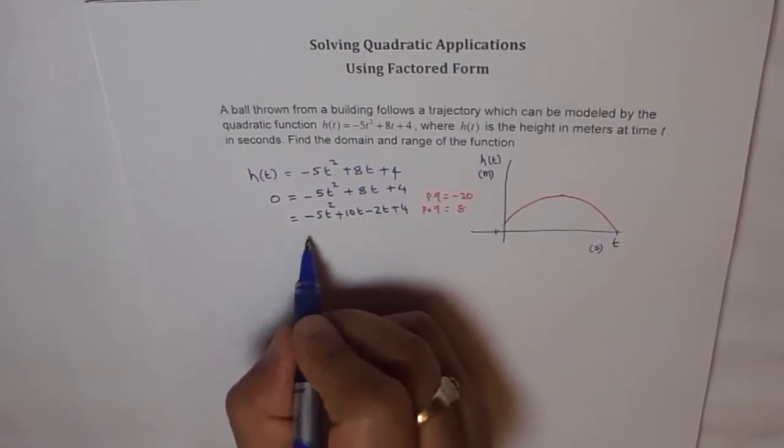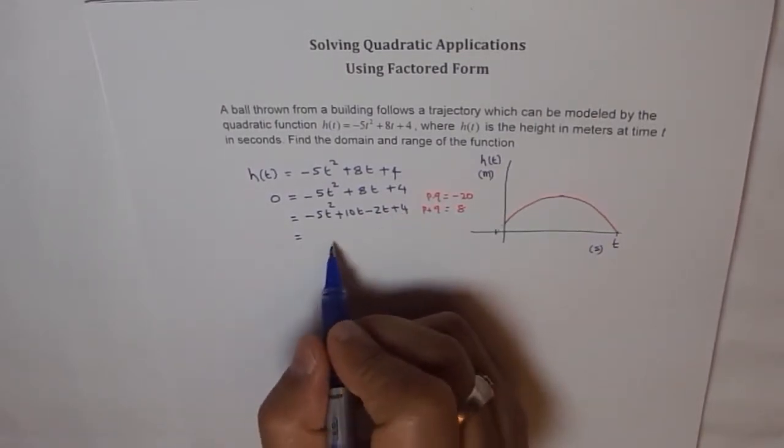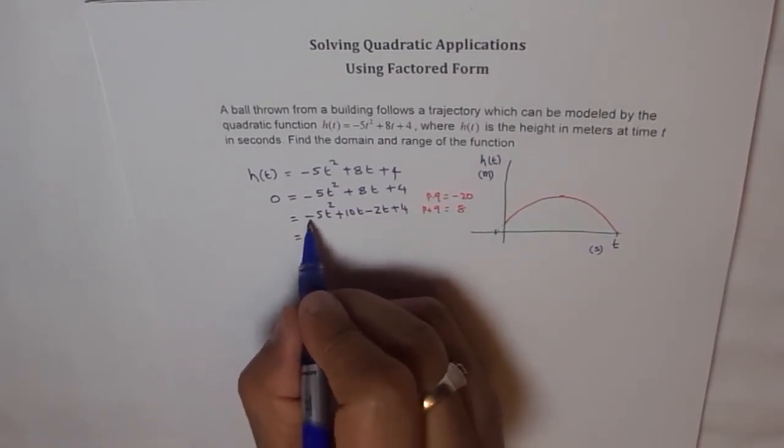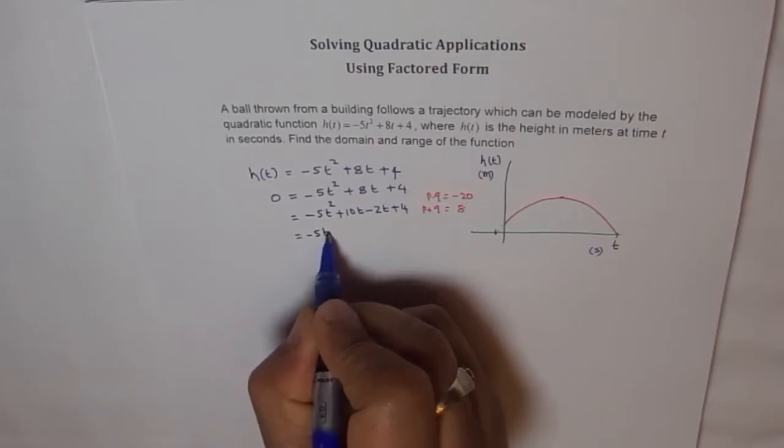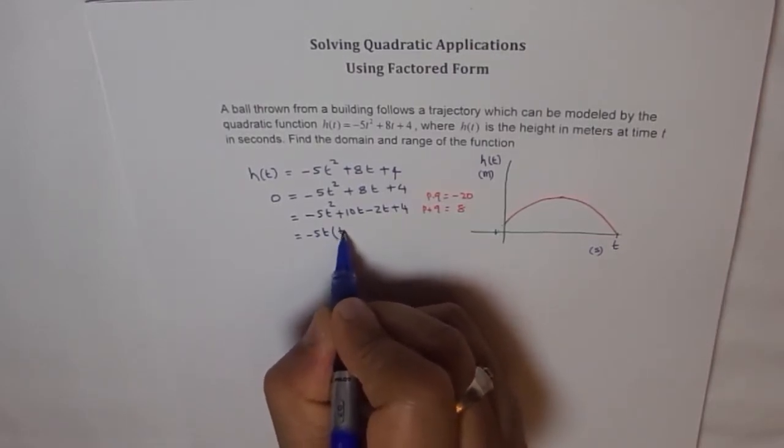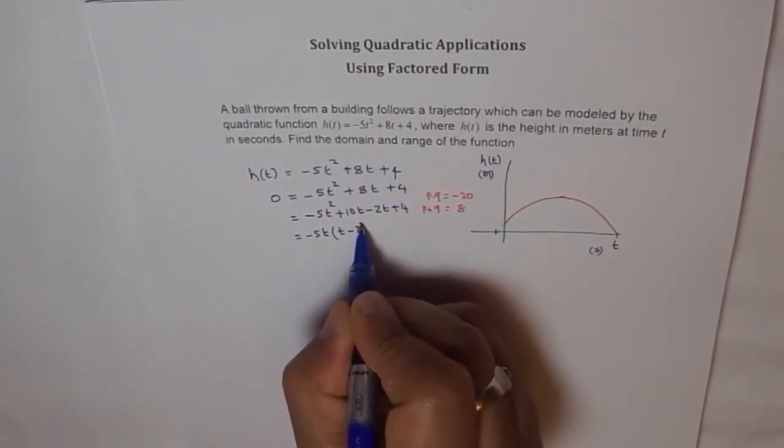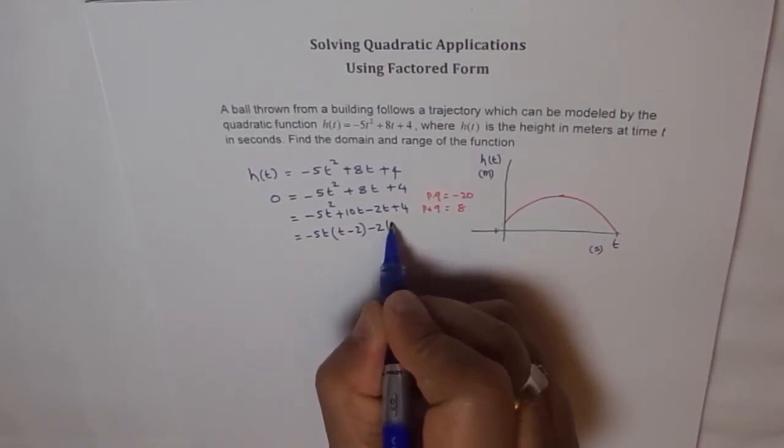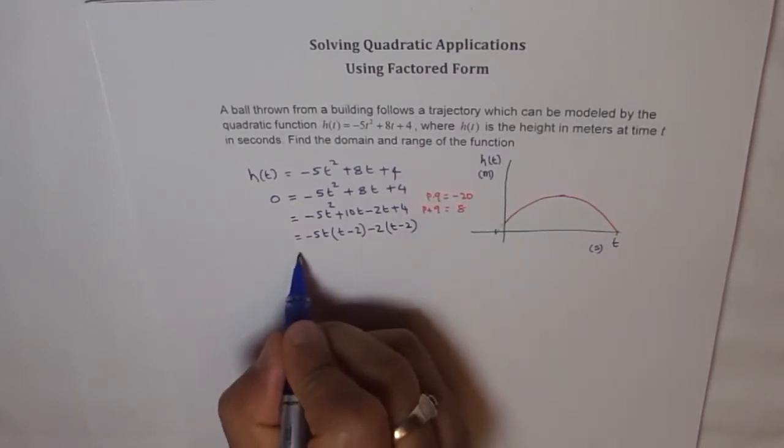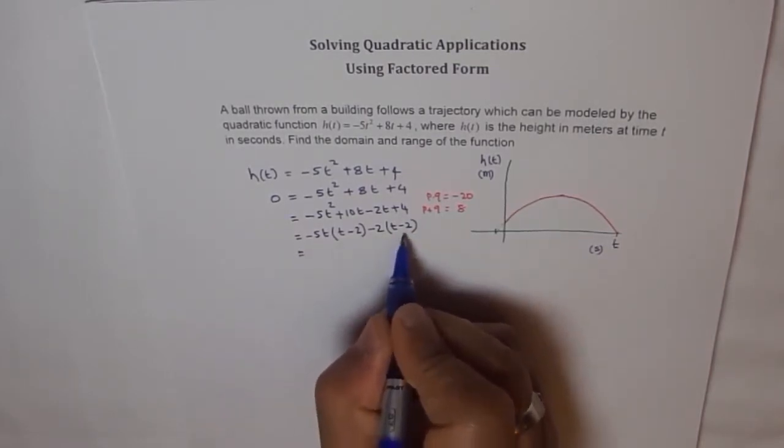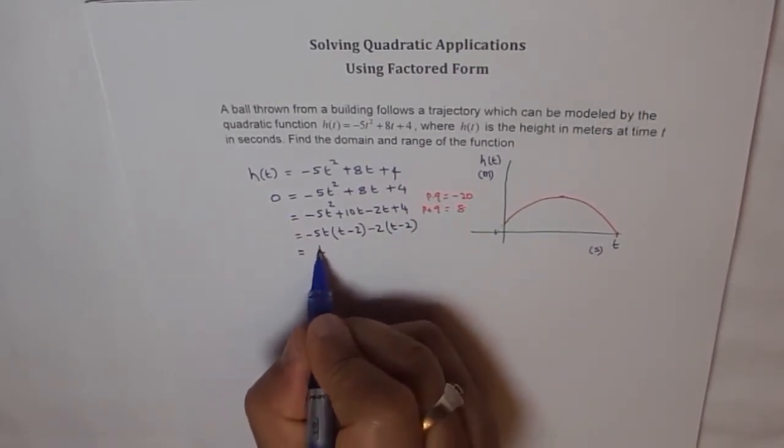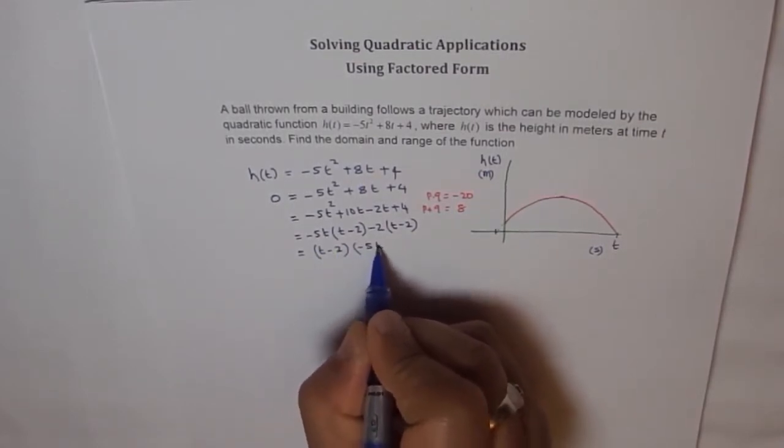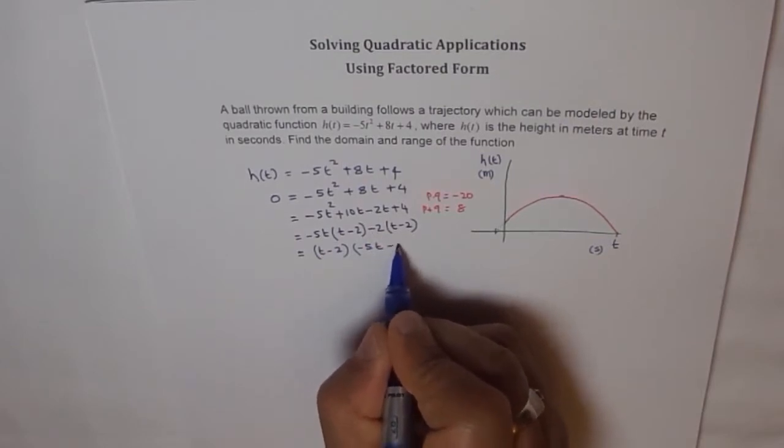Now we will factor. We have got four terms here, so we will group them and then factor. Here minus 5t is common, and you are left with t minus 2. And here 2 is common - we will take minus 2 outside and we get t minus 2. Now we can factor out t minus 2. We get t minus 2, and from here we get minus 5t and from here we get minus 2.